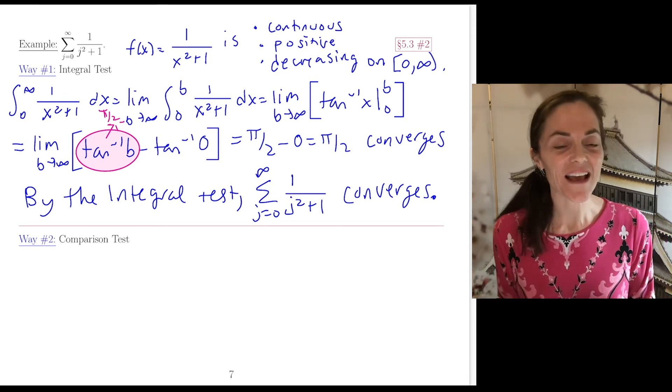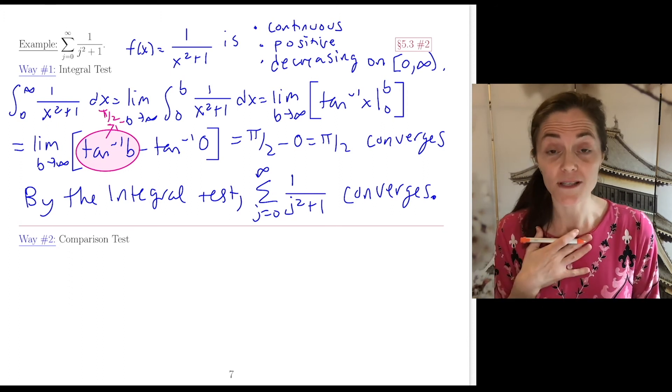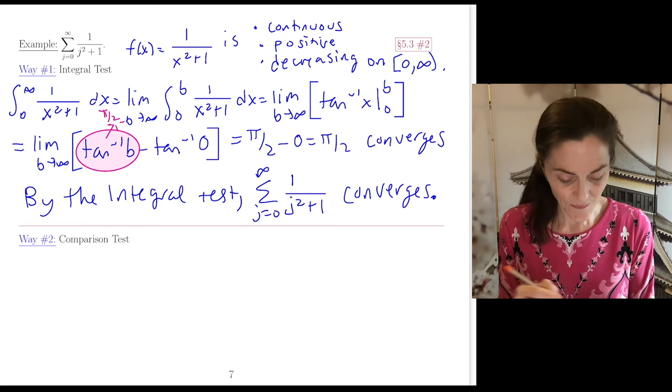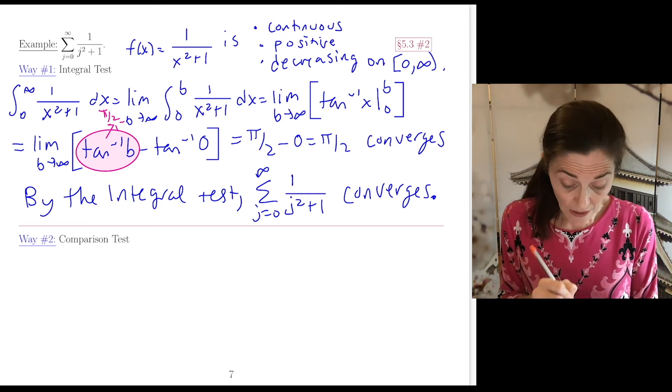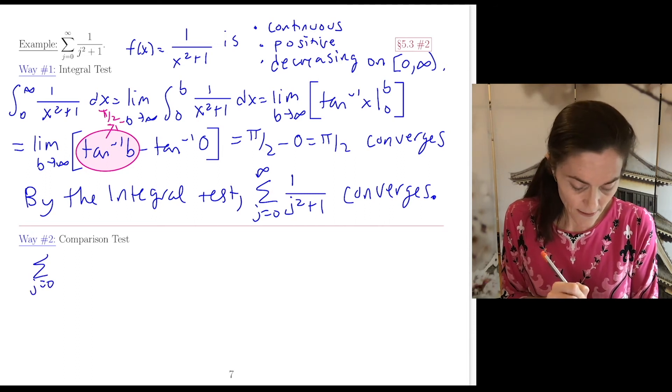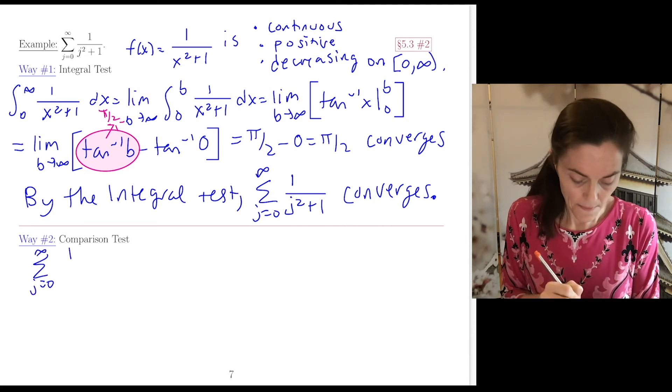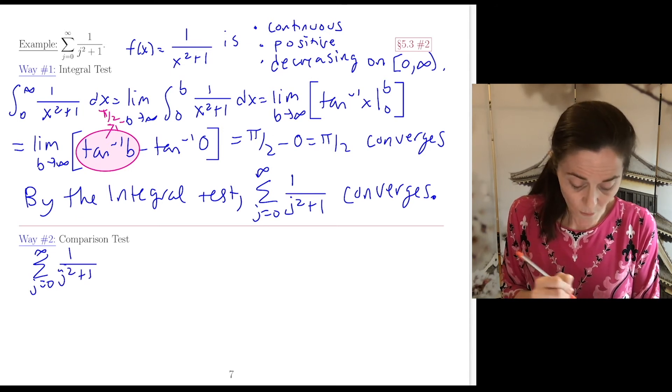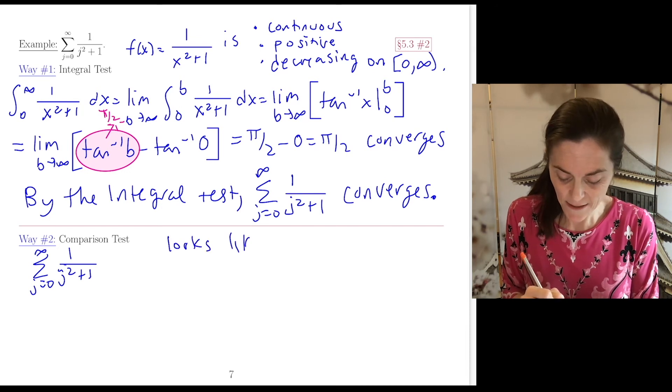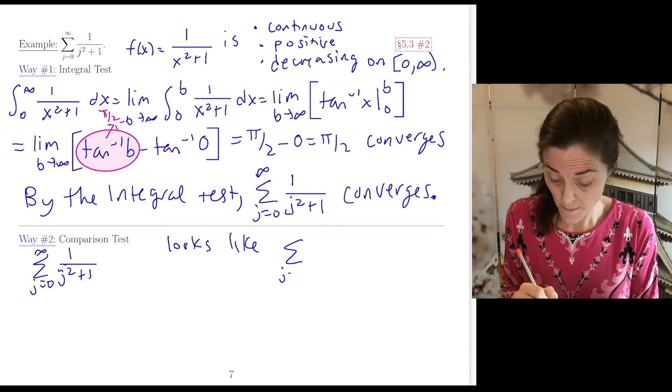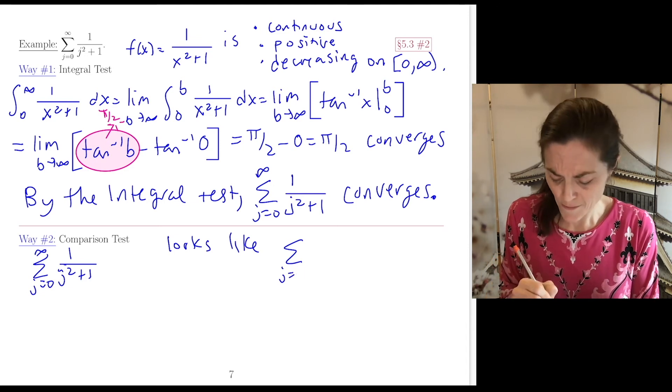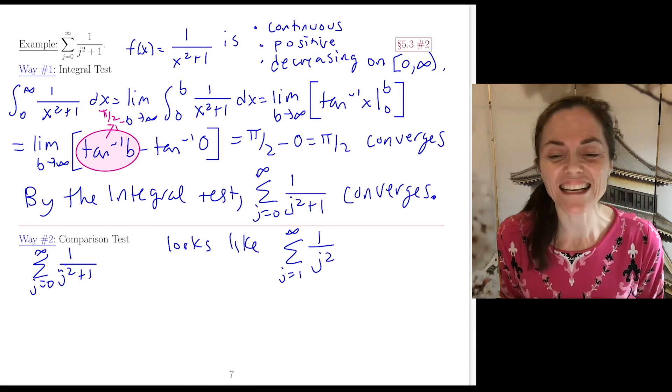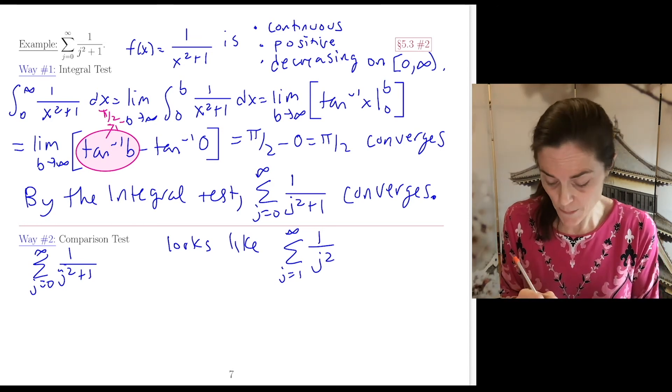Now let's do another way to practice another test. Personally, I would probably do way two if I saw this problem. This series looks like a p-series. But the p-series 1/j² can't start at 0; I need to start it at 1 since it wouldn't be defined at j=0. But this is a p-series.